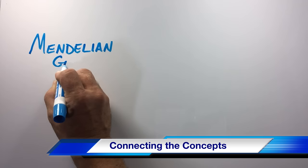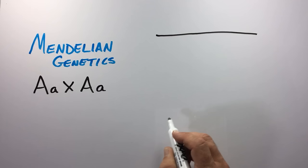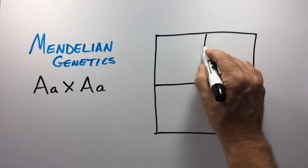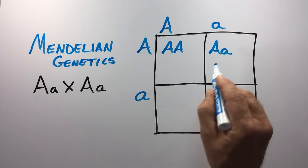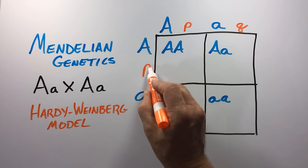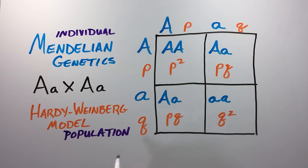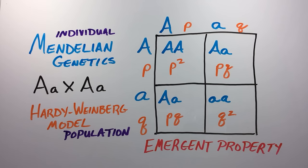So how do all of these concepts relate to one another? From basic Mendelian genetics, if you have a cross between two heterozygous individuals, you can draw a Punnett square to predict the outcomes. Under the Hardy-Weinberg model, we replace the alleles with their frequencies P and Q and fill in the Punnett square to see all of the different probability outcomes. This shows how events at the population level, described by the Hardy-Weinberg model, are based upon events at the individual level described by basic Mendelian genetics. This likewise demonstrates how evolution, or the changes in population allele frequencies, is an emergent property of events occurring at the individual level through inheritance and Mendelian genetics.